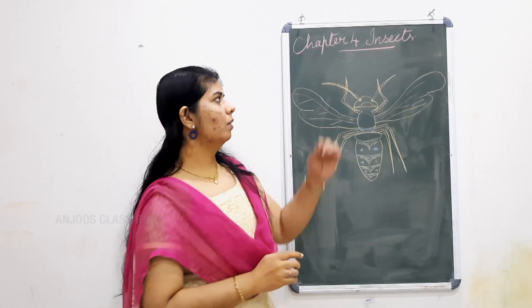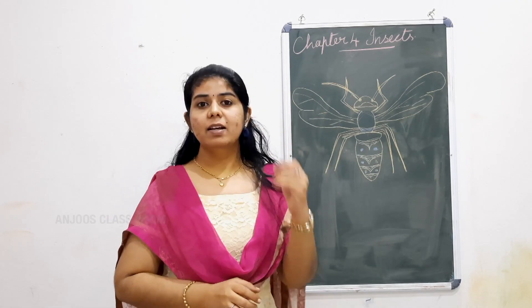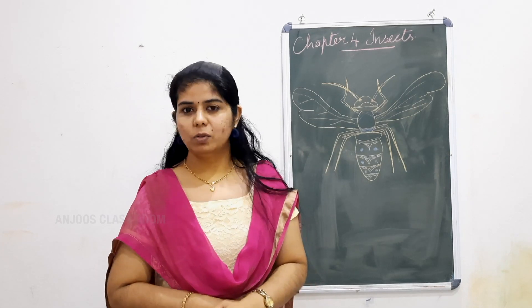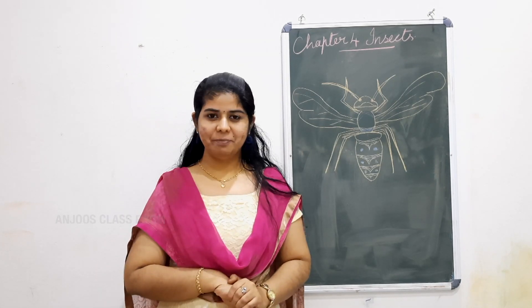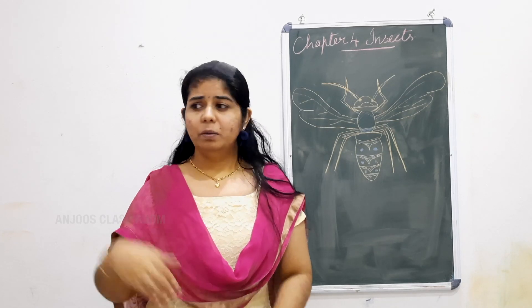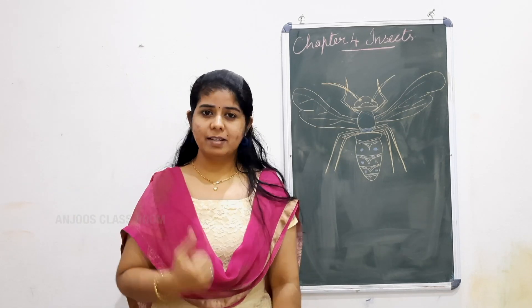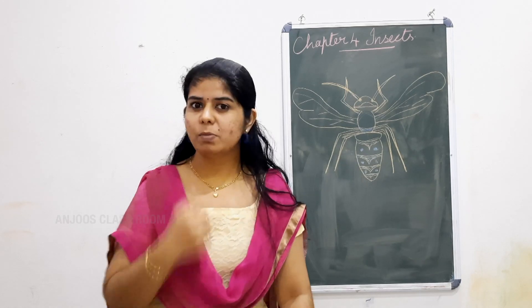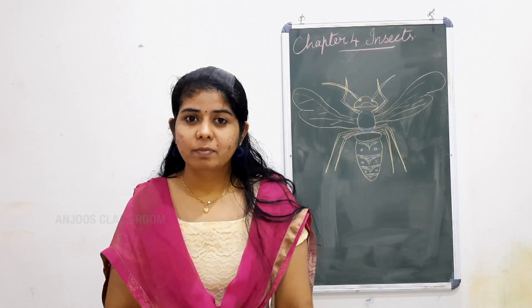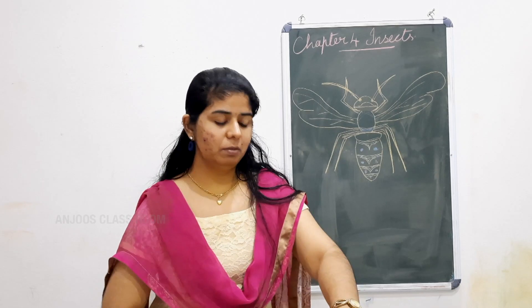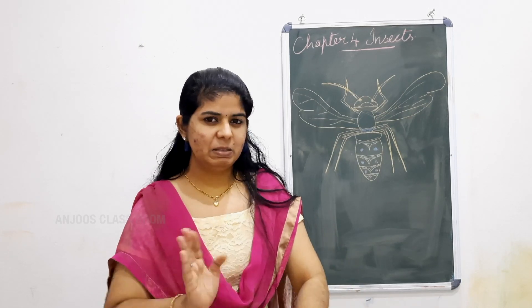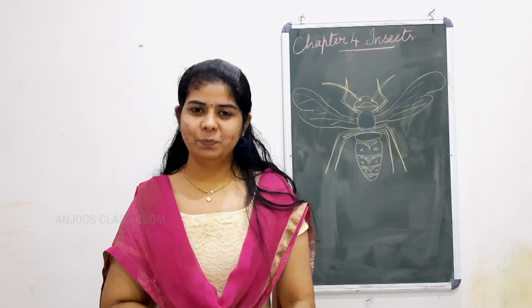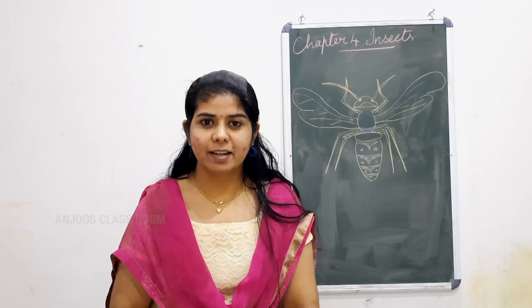So that is what we are going to learn about — the next living thing, that is the insect. About insects you are going to learn in this chapter. So you can see many insects around us. Can I name some of the insects around us? One I mentioned — you will be hitting on it and scratching after that. Which is that one? Mosquito. Yes, that is an insect.